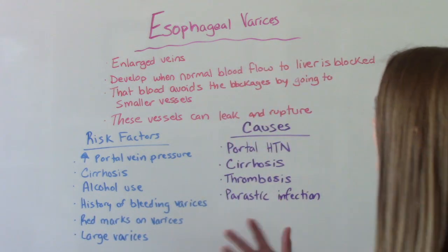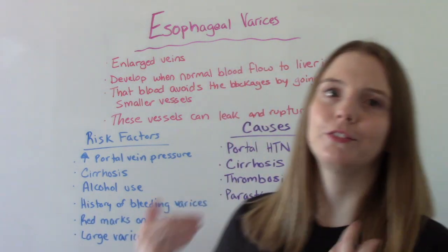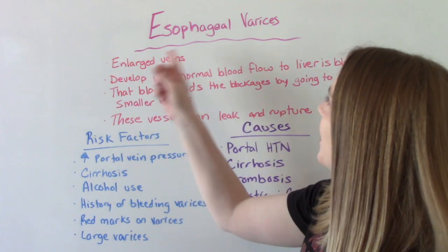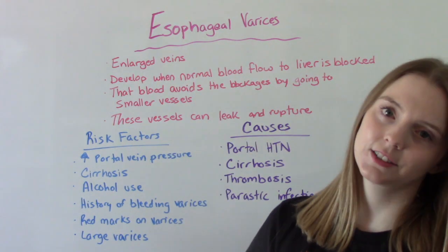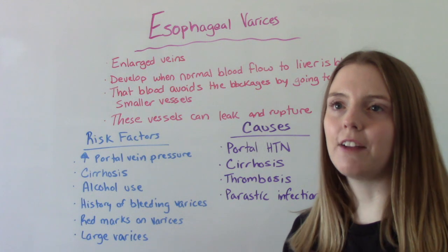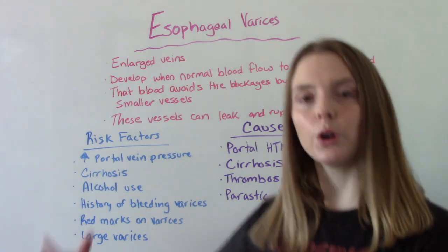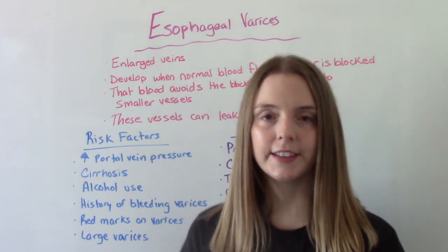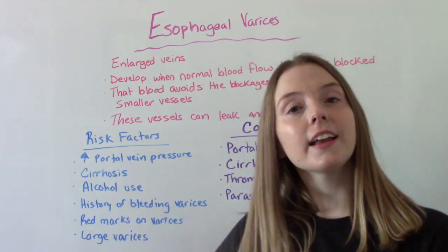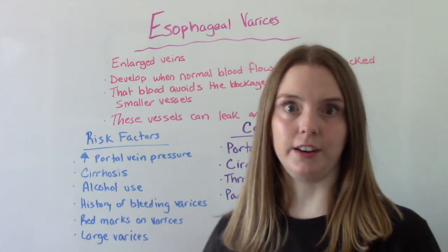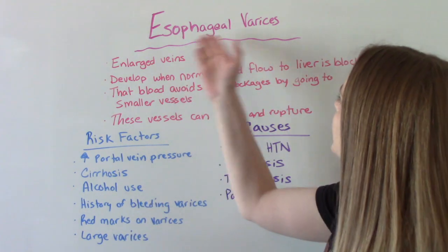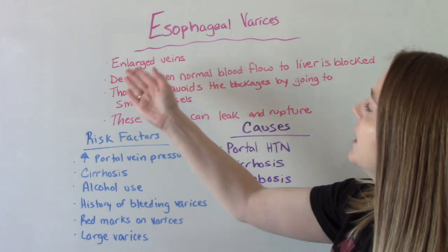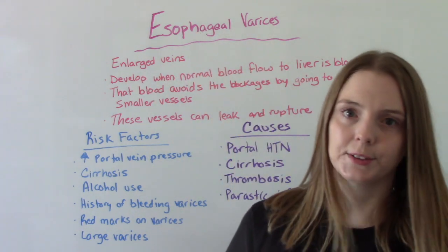First of all, let's define the word varices. What are they? They are enlarged veins. Maybe you can think about varicose veins — people have varicose veins on their lower extremities, large veins. That can happen to any vein in your body. So esophageal varices are simply enlarged veins in the esophagus.